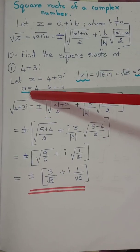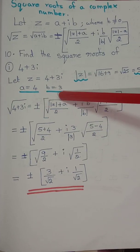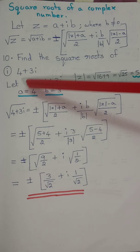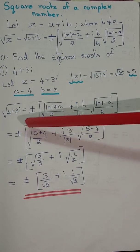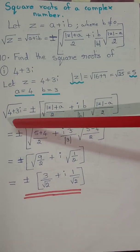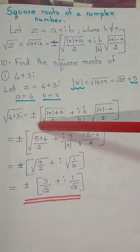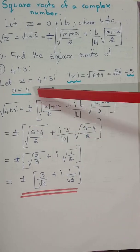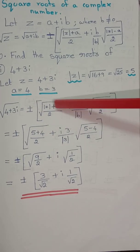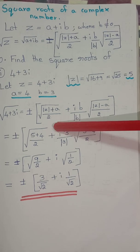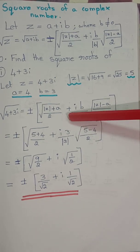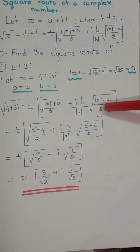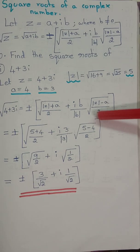Now, modulus of z is 5. a is 4 (real portion) and b is 3. The formula for root of 4 plus 3i is: plus or minus root of modulus of z plus a by 2, plus ib by modulus of b, times root of modulus of z minus a by 2.